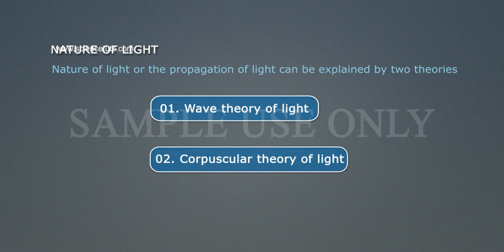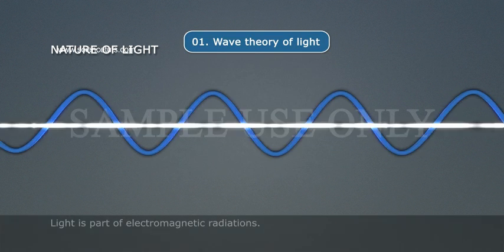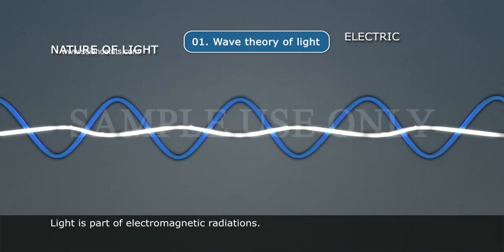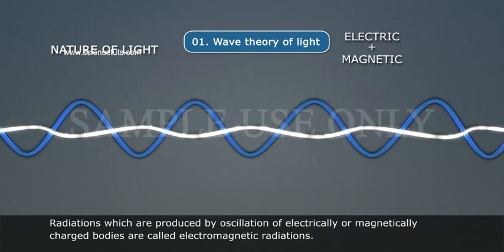2. Corpuscular Theory of Light. Wave Theory of Light: Light is part of electromagnetic radiations.